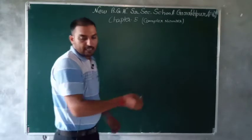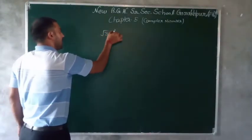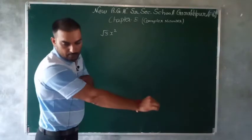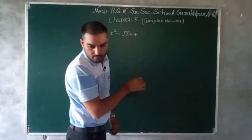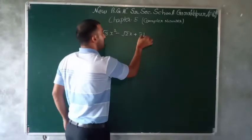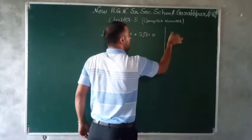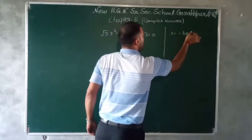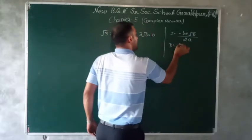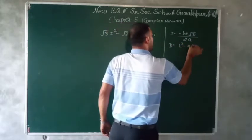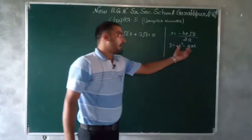Next question: √3·x² - √2·x + 3√3 = 0। Formula साथ में लिखते हैं: x = (-b ± √D) / 2a, and D = b² - 4ac।